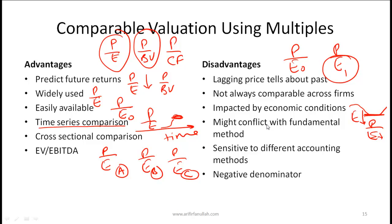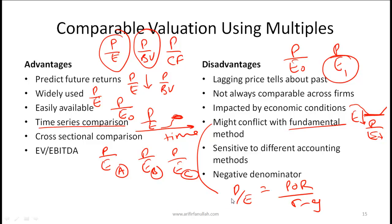Sometimes this comparables method — where you come up with the appropriate PE based on industry averages — might conflict with the fundamental method for deriving ratios, which we will talk about on the next slide. As a quick recap, the fundamental method says that the PE ratio equals the payout ratio over R minus G. If this method gives you a number different from the comparables method, that conflict is another disadvantage. Additionally, ratios are sensitive to different accounting methods — different companies may have different accounting methods and hence come up with slightly different numbers for earnings.